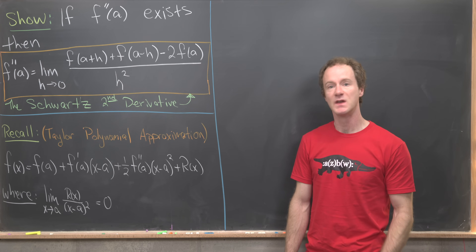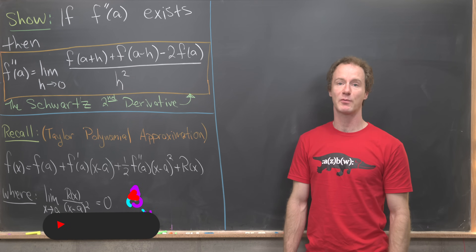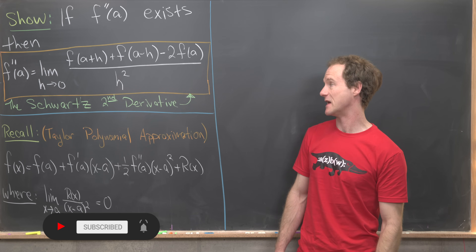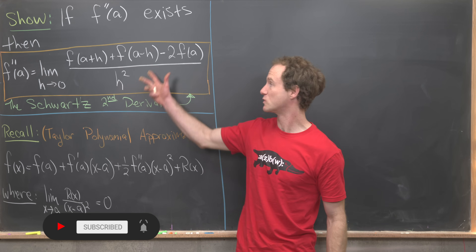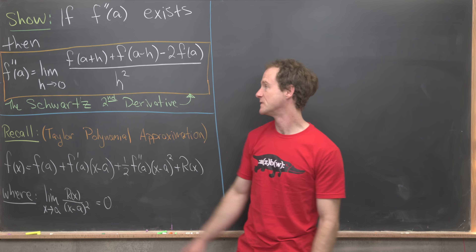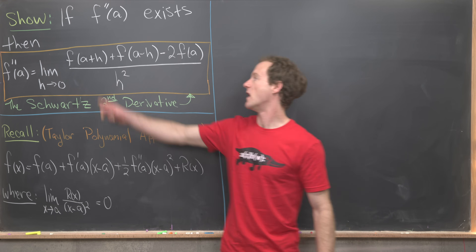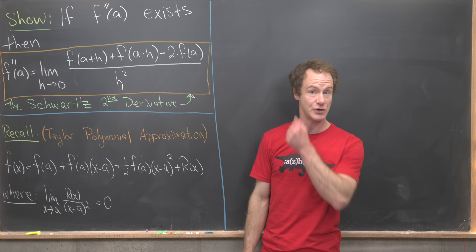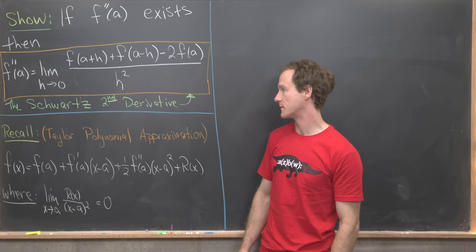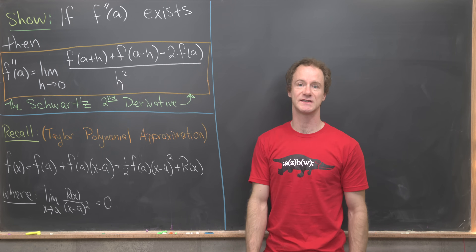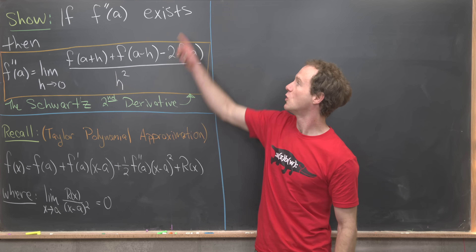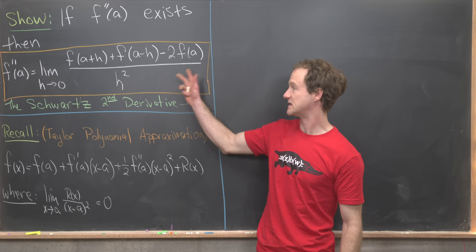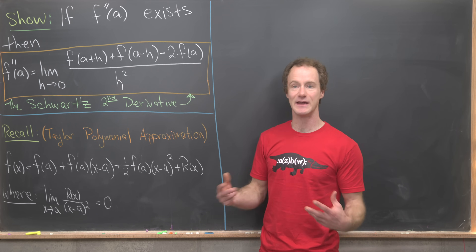Here we're going to look at a nice calculus problem. We want to show that if f double prime of a exists — in other words, f is twice differentiable at a — then f double prime of a equals the following limit: the limit as h goes to zero of f of a plus h plus f of a minus h minus two times f of a, all over h squared. This is called the Schwartz second derivative. We're first assuming that f double prime of a exists, and if it exists, it has this nice limit realization.